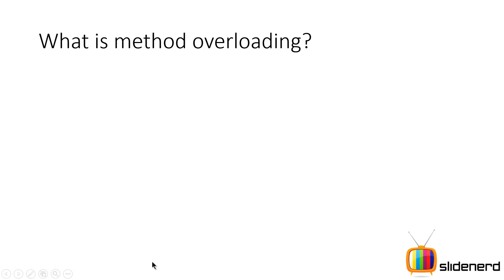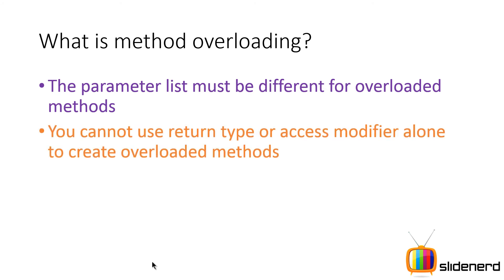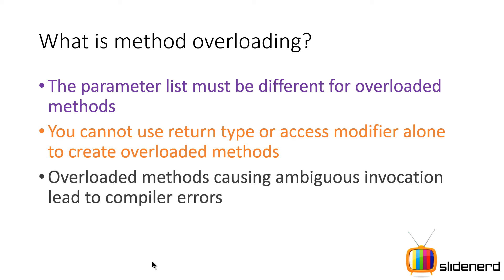The parameter list must be different for overloaded methods. You cannot use the return type alone to distinguish overloaded methods. For example, you cannot have one method declared as 'int max' and another as 'void max' with the same parameters, because the compiler won't know which version to call.